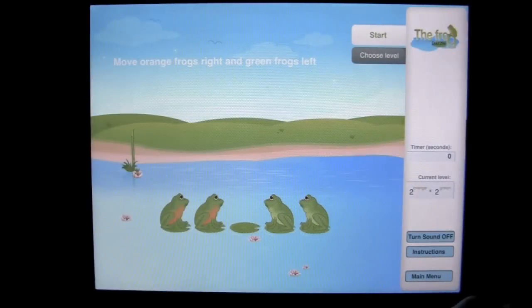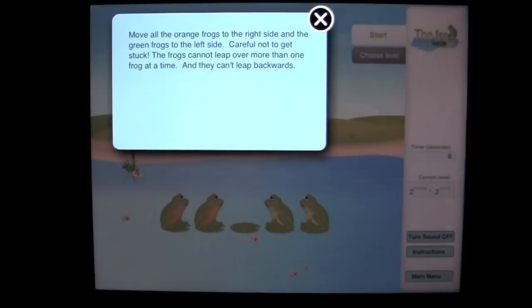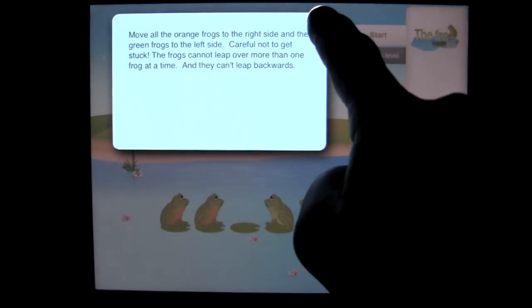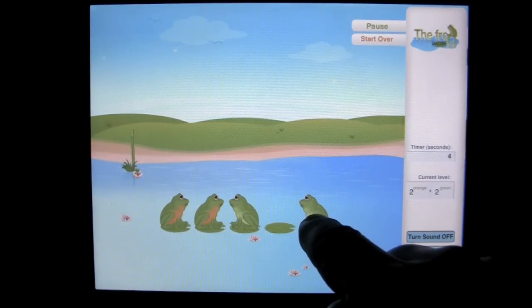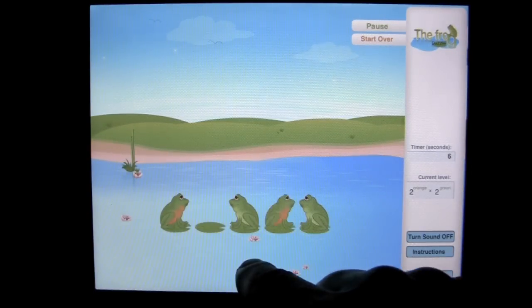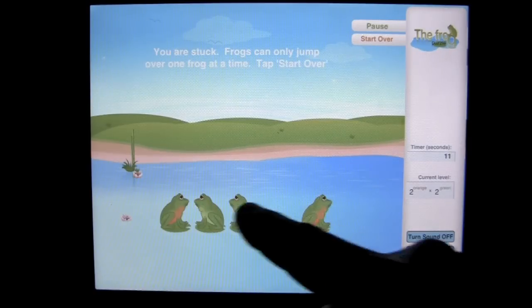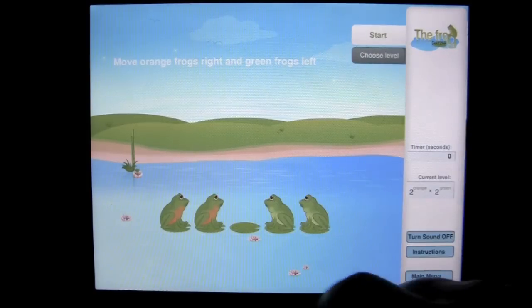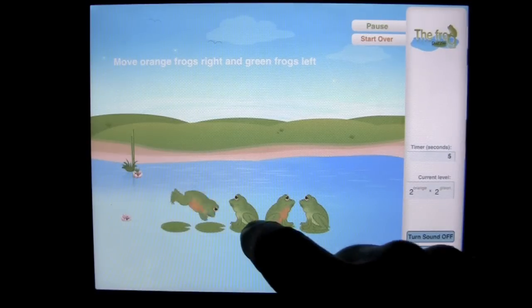One of my other favorite games is the frog game. Move orange frogs right and green frogs left. You can tap on the instructions here. Move all the orange frogs to the right and the green frogs to the left side. Careful not to get stuck. The frogs cannot leap over more than one frog at a time. So you have to do this correctly. And I got stuck.